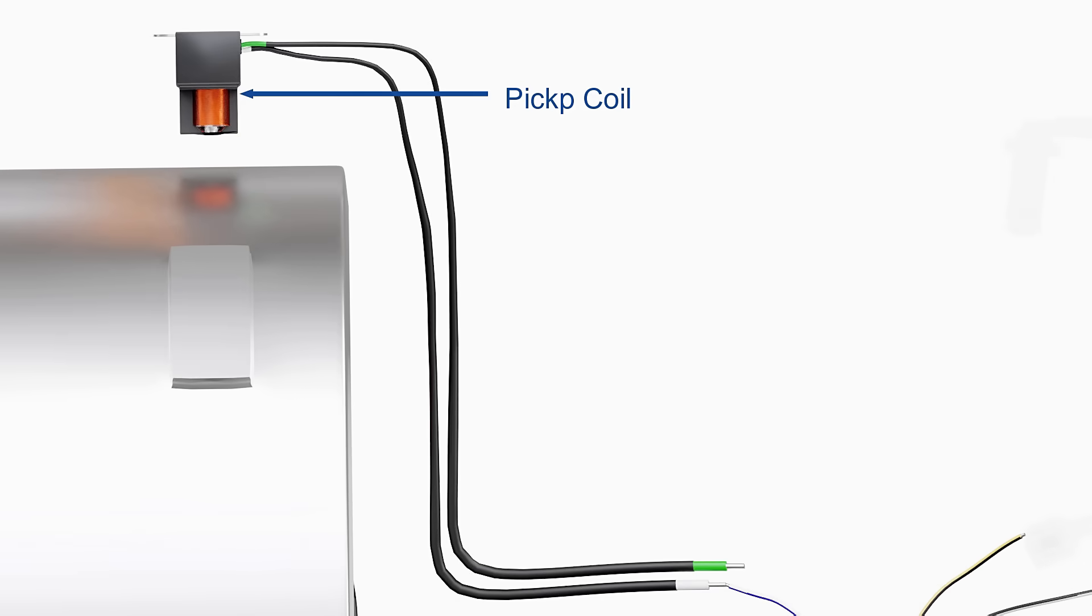Another component, known as a pickup coil, tells the CDI unit when to dump this charge. The pickup coil has a small magnet with a coil of wire around it.